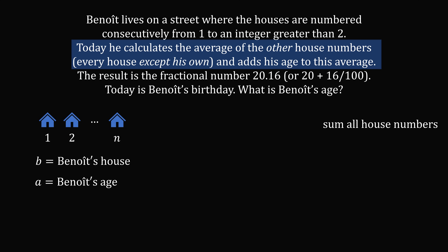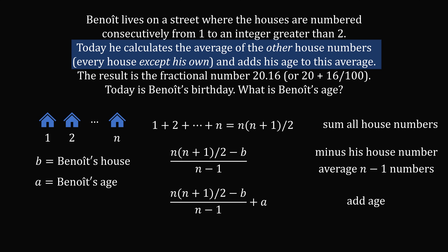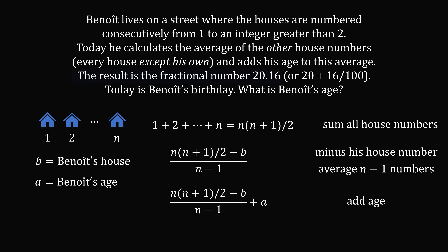First, let's take the sum of all the house numbers. The houses are numbered from 1 to n, so the sum is the famous formula n(n+1)/2. We then remove Benoit's house number B, giving us n(n+1)/2 minus B. To find the average of the remaining n minus 1 numbers, we divide by n minus 1. Finally, he adds his age A to this result, and the result equals 20.16.